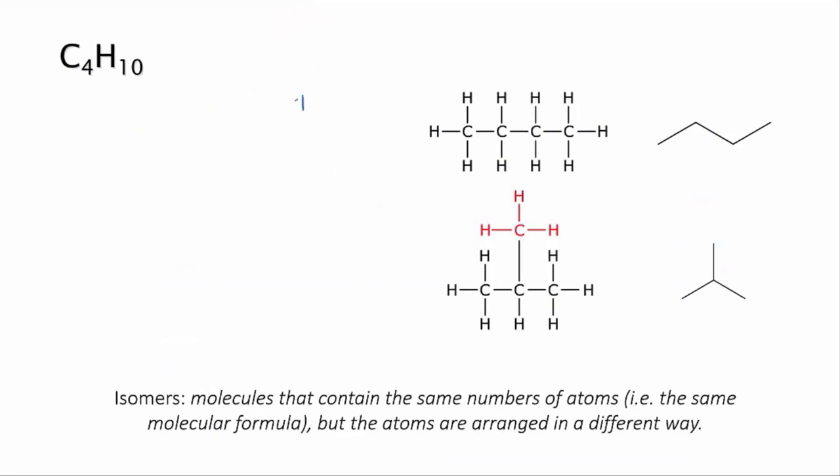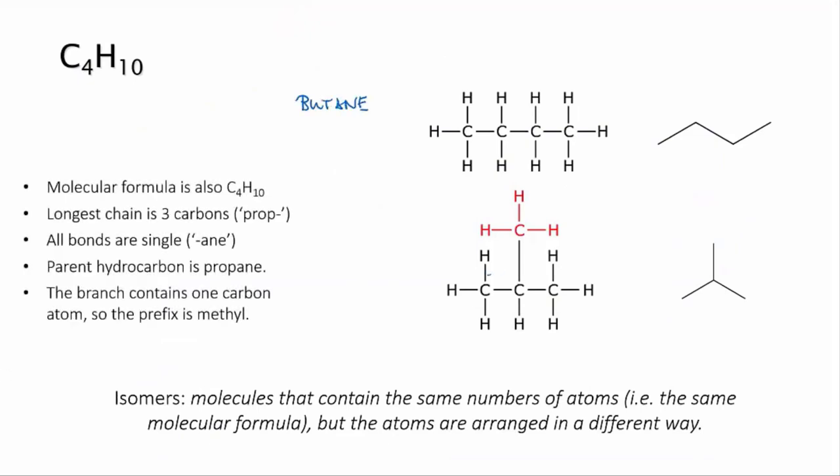So, back to our second isomer. The naming rules say that we should find and name the longest chain in the molecule, so that's propane. And our list of branches says that a one carbon branch, like we have here, should be methyl. So the name of this molecule is methylpropane.